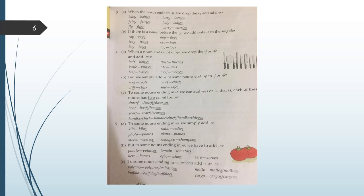When a noun ends in F or FE, we drop the F or FE and add VES. Half, halves. Knife, knives. Leaf, leaves. Thief, thieves. Life, lives. Wolf, wolves. But we simply add S to some nouns ending in F or FE. Roof, roofs. Cliff, cliffs. Chief, chiefs. Safe, safes.